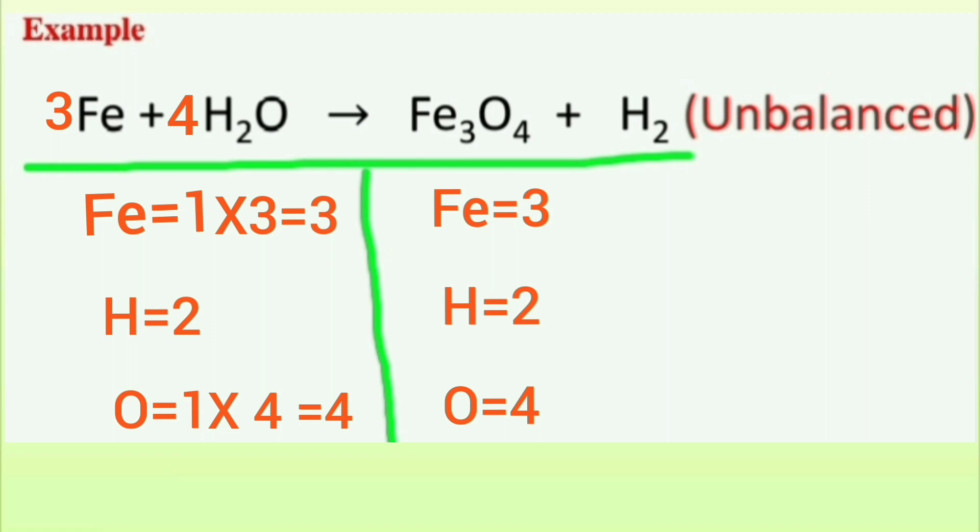But the number of hydrogen on reactant side changes: two times four equals eight, and product side two times four equals eight. After that all atoms are balanced on both sides of the equation. Now I have three iron on each side.